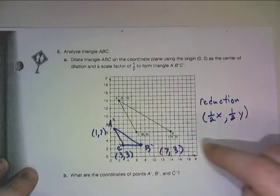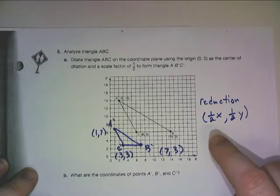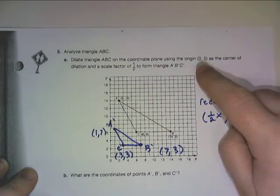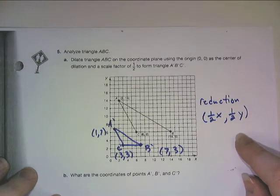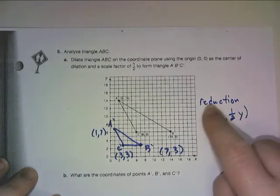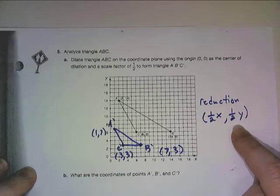That obviously creates a reduction of our original. And because my scale factor was one half and my center of origin was used as the center of dilation, then I can write the algebraic rule one half x, one half y.